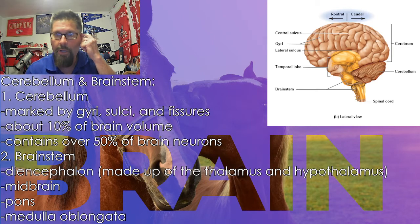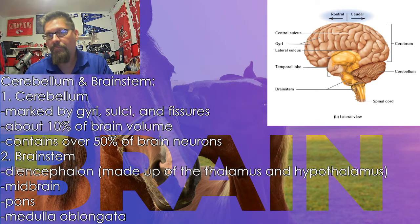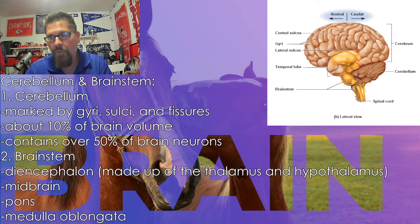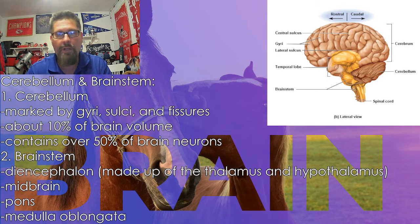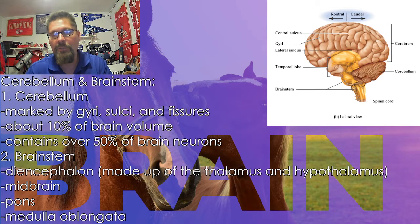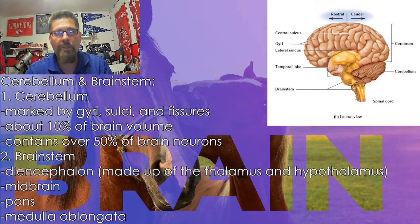Despite being only about 10% of the overall brain volume, over 50% of the brain's neurons are located in the cerebellum. The brain stem sits right below the main brain mass, where it dips down and exits the skull into the spinal cord. It consists of the midbrain at the top, then the pons, and the medulla below that — almost like a thigh-to-calf muscle relationship in appearance.